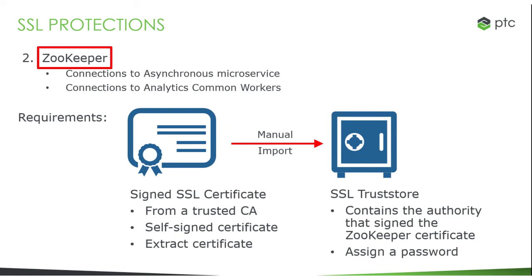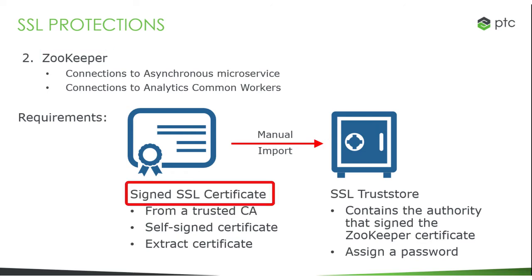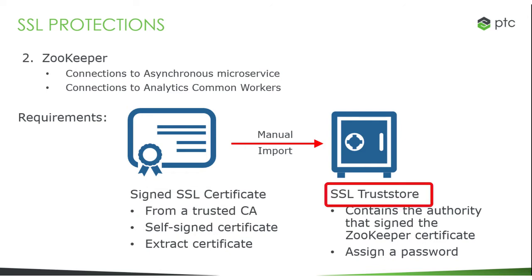Next, let's think about communication with ZooKeeper. Enabling SSL here can protect ZooKeeper connections to both the Asynchronous Microservice and the Analytics common workers. To enable SSL for ZooKeeper, you will need a key store with a signed SSL certificate. Again, you can either obtain a certificate from a trusted certificate authority or use a self-signed certificate. We'll walk through the steps to generate a certificate when we run the installer. In the case of ZooKeeper, the Trust Store is not auto-generated during installation, so you will need to extract the signed certificate and import it manually into the Trust Store. We'll cover the steps to do this when we walk through the installation.